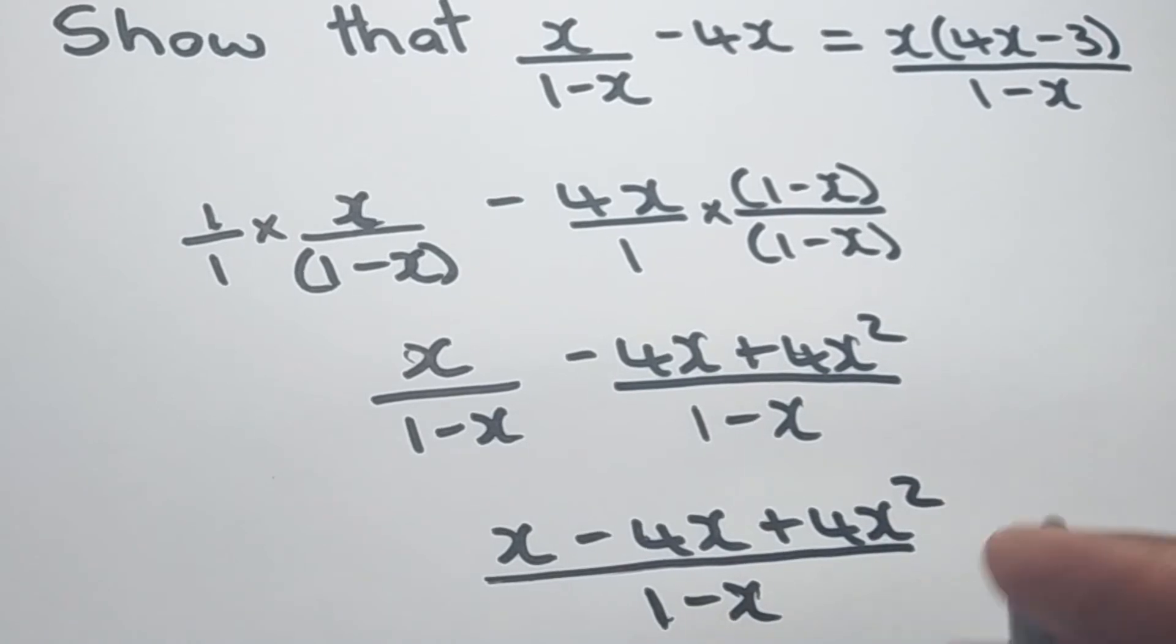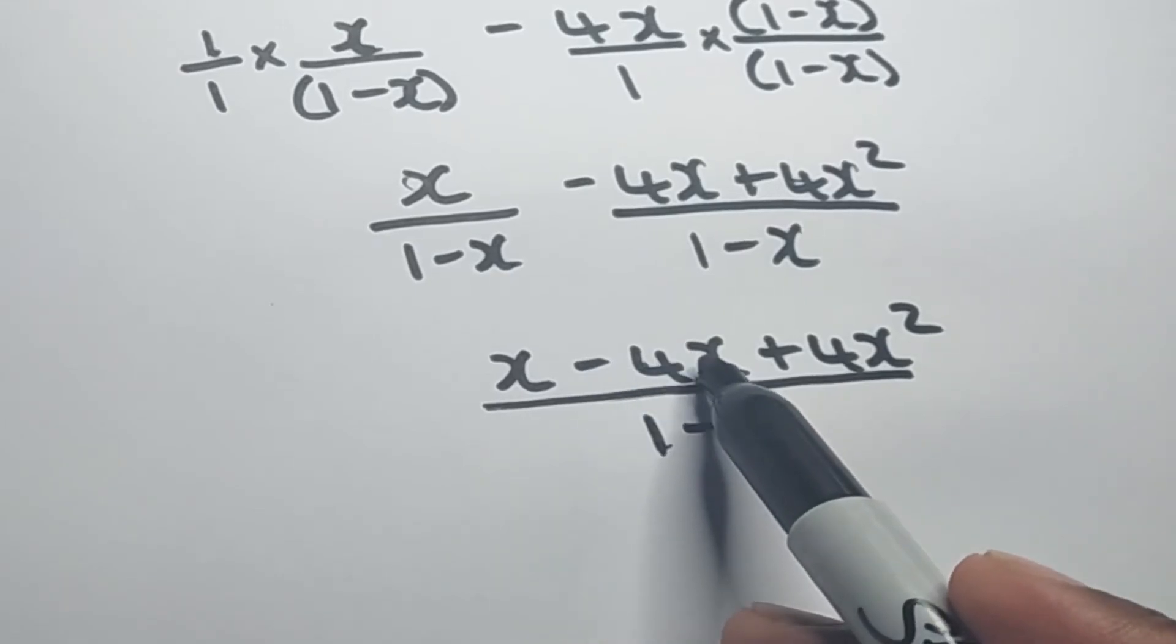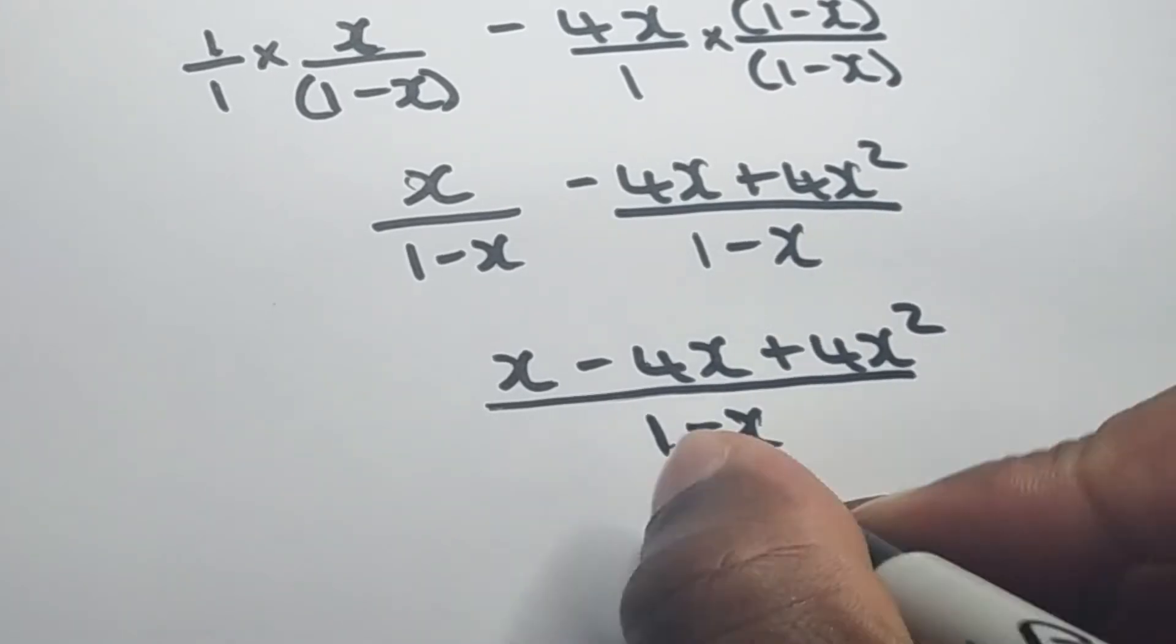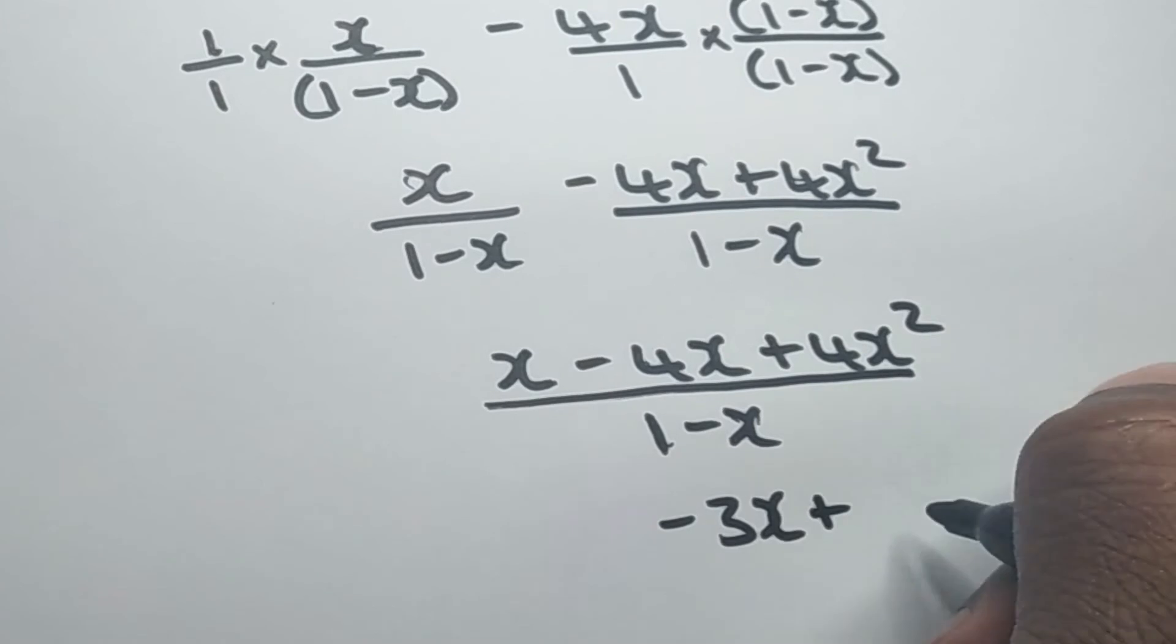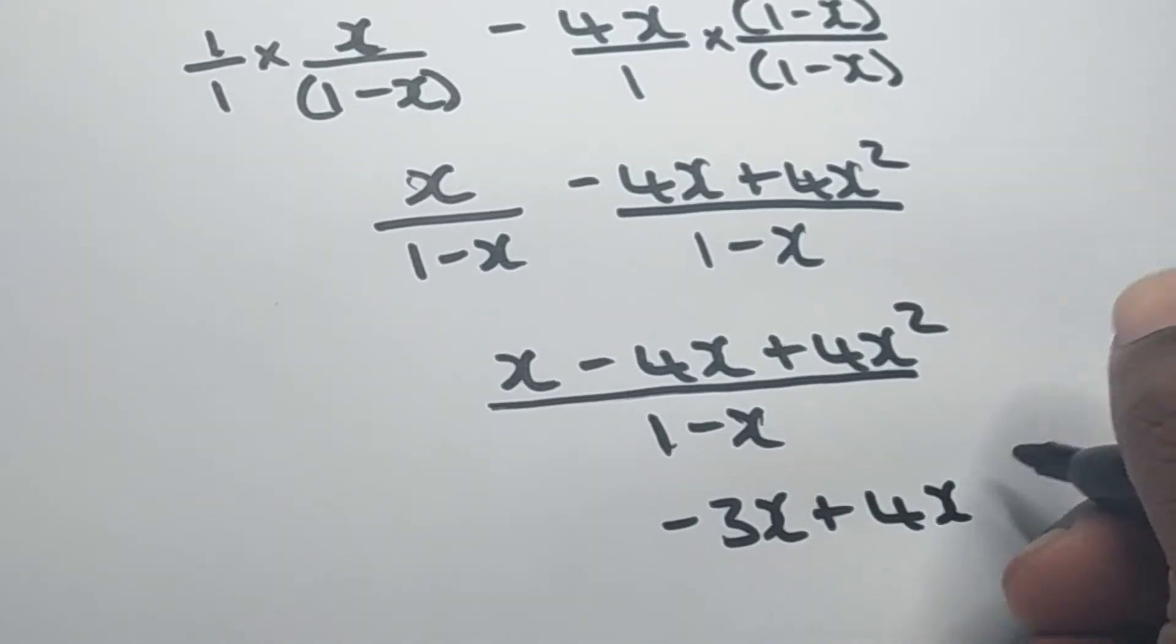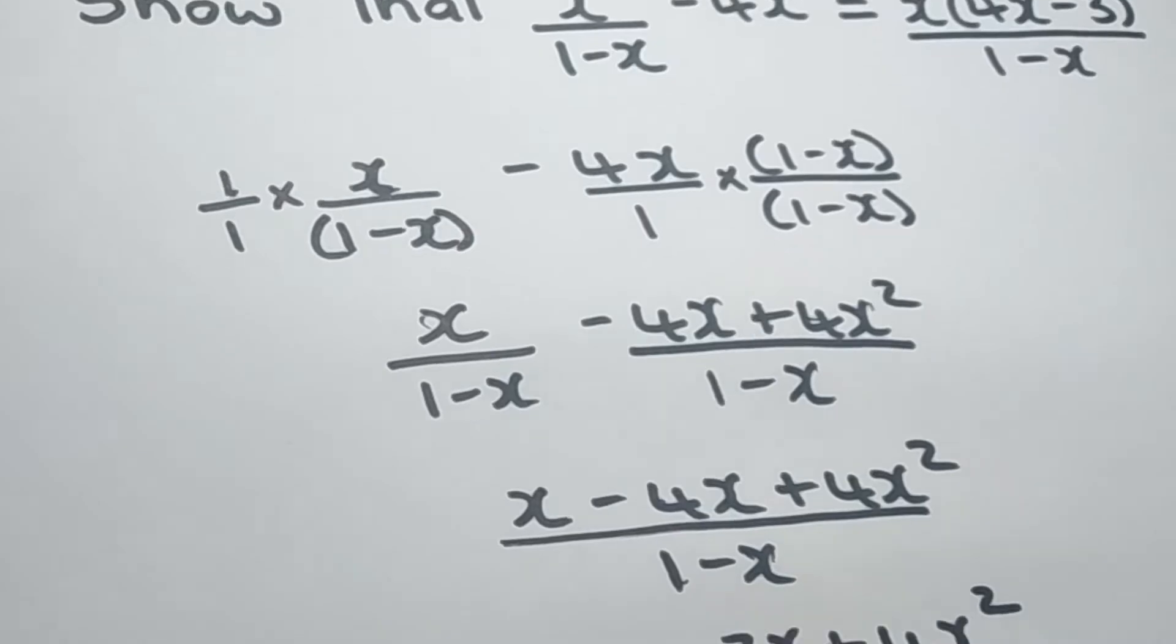And what we can now do is to simplify like terms. So we have x minus 4x that would give us a negative 3x right here. Still have the plus 4x² over here, all over 1-x.